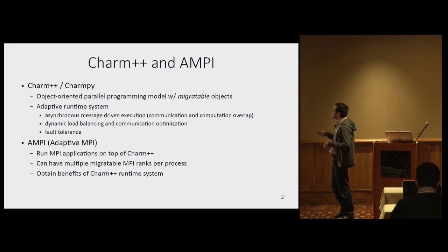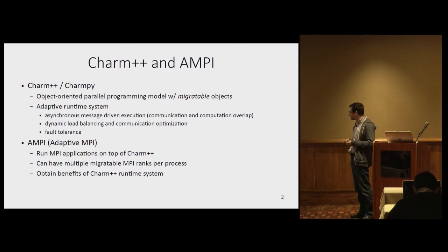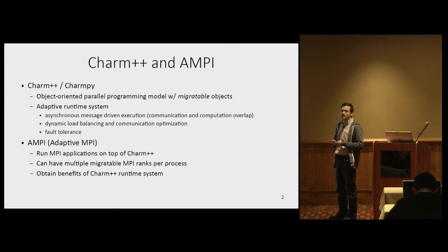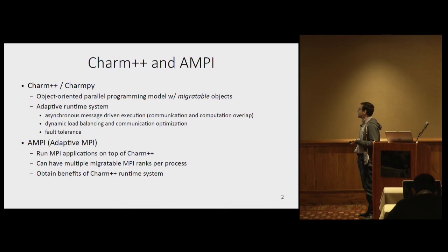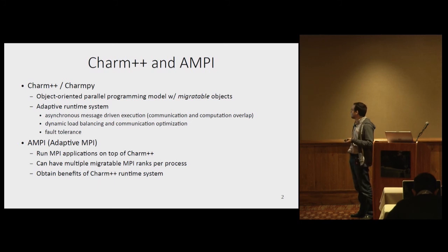We also have a Python version of Charm++, which is built on top of the C++ runtime. It has its own unique features and is very simple to use. And then finally, adaptive MPI, known as AMPI, is basically an implementation of MPI on Charm++, which allows running MPI applications on top of Charm++. In many cases, you can just run your MPI application with minimal changes or no changes, depending on the use of global variables.